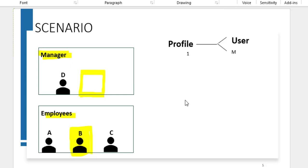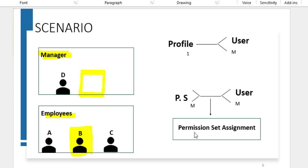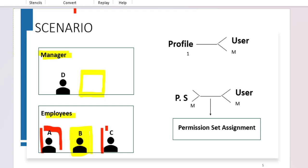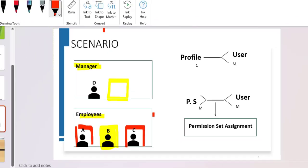One profile has many users, meaning there is a one-to-many relationship — one profile to many users — but one user cannot have many profiles. In permission sets, we can assign multiple permission sets to multiple users. When we have a many-to-many relationship, there is a junction object — here it is the permission set assignment. The other users who are not assigned can only access data from their own profile.